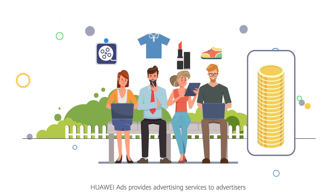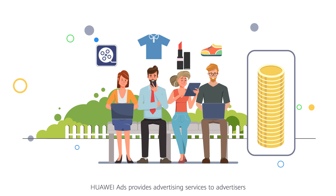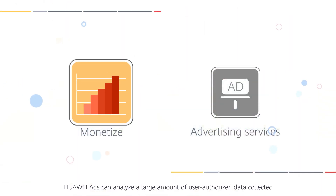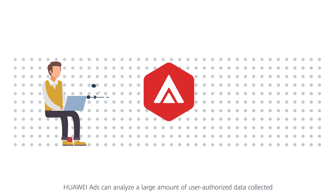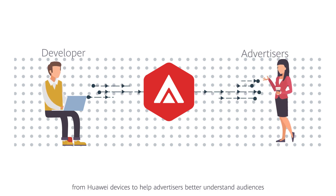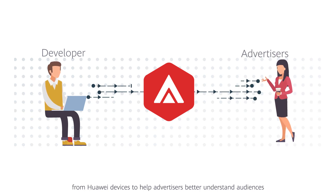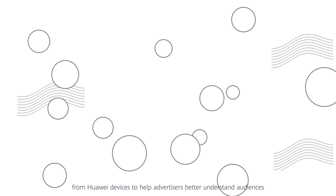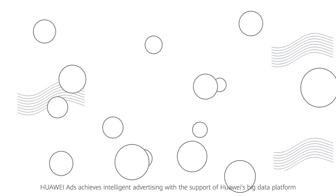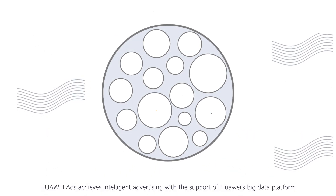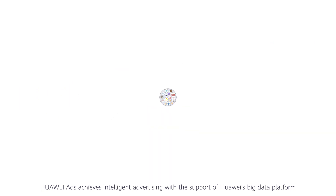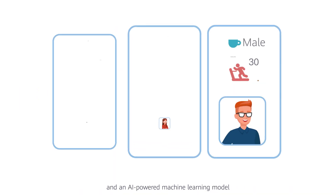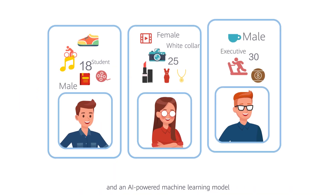Huawei Ads provides advertising services to advertisers. Huawei Ads can analyze a large amount of user-authorized data collected from Huawei devices to help advertisers better understand audiences. Huawei Ads achieves intelligent advertising with the support of Huawei's Big Data Platform and an AI-powered machine learning model.